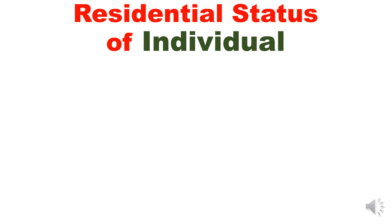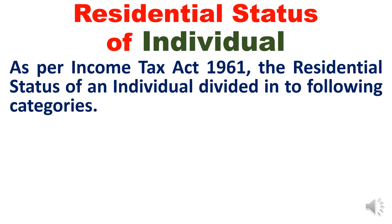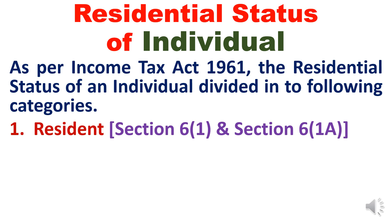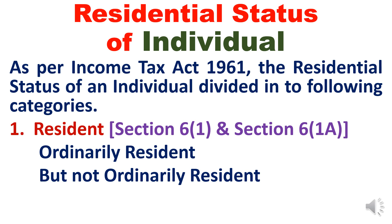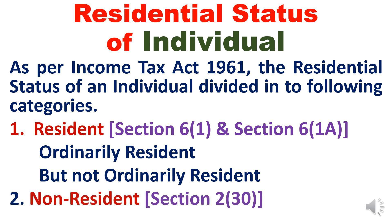How do we identify the residential status of an individual? As per the Income Tax Act 1961, the residential status of an individual is divided into two main categories. Category 1 is 'Resident' under Section 6(1) and Section 6(1A) — within resident we have 'ordinarily resident' and 'not ordinarily resident'. Category 2 is 'Non-Resident'. So for individuals, two categories are available, and within the first one, ordinarily resident and not ordinarily resident will be determined.